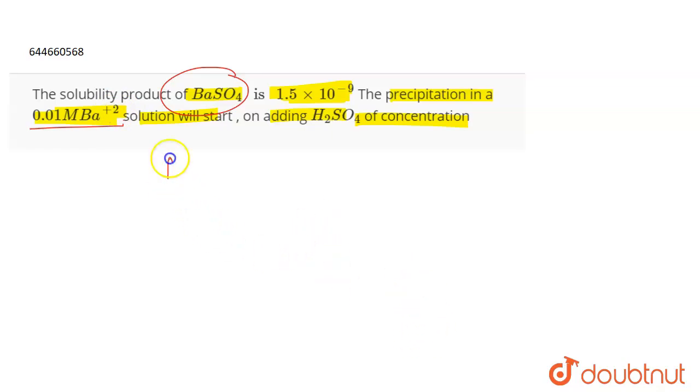So if we talk about barium sulfate, it's a sparingly soluble salt which dissociates to give BA plus 2 and SO4 2 negative. If the solubility of BASO4 is S, as it gives 1 BA plus 2 ion and 1 SO4 2 negative, the solubility of BA plus 2 and SO4 2 negative will also be S.